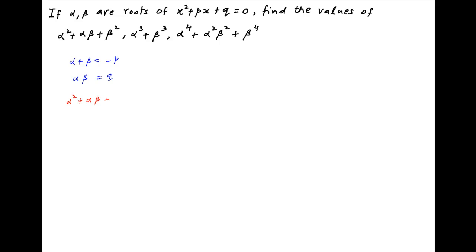Now we need to evaluate alpha squared plus alpha beta plus beta squared. This is equal to alpha squared plus beta squared — which can be replaced with alpha plus beta whole square minus 2 alpha beta — plus alpha beta. This simplifies to alpha plus beta whole square minus alpha beta, which is equal to P squared minus Q.